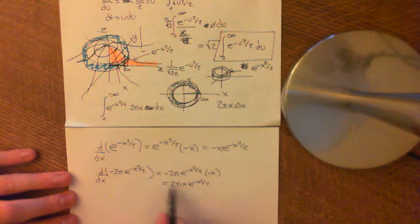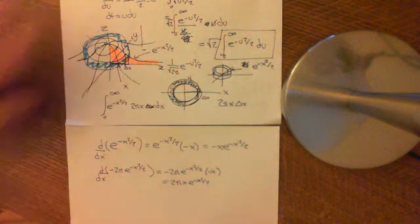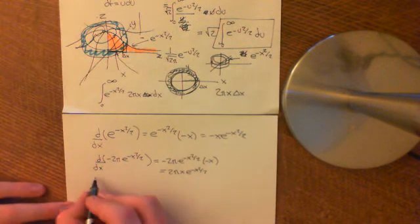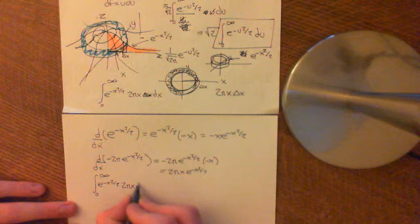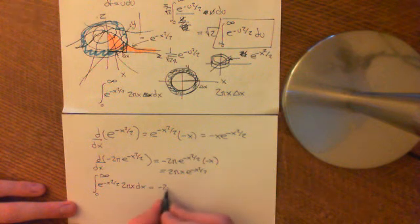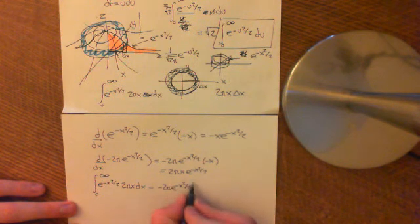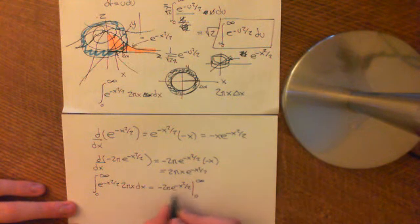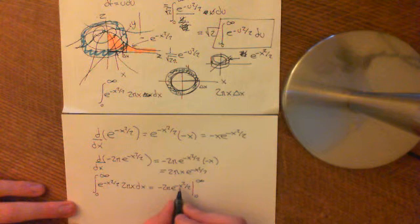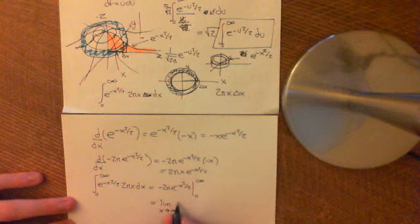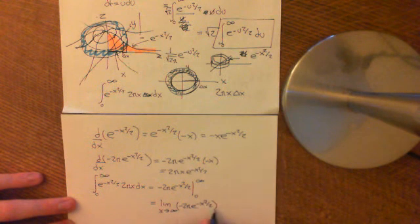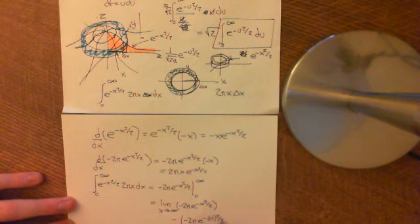By the second fundamental theorem of calculus, the integral from 0 to infinity of e to the negative x squared over 2 times 2 pi x dx equals negative 2 pi e to the negative x squared over 2, evaluated between 0 and infinity. That gives us the limit as x approaches infinity of negative 2 pi e to the negative x squared over 2, minus the quantity evaluated at 0, which is negative 2 pi e to the negative 0 squared over 2.